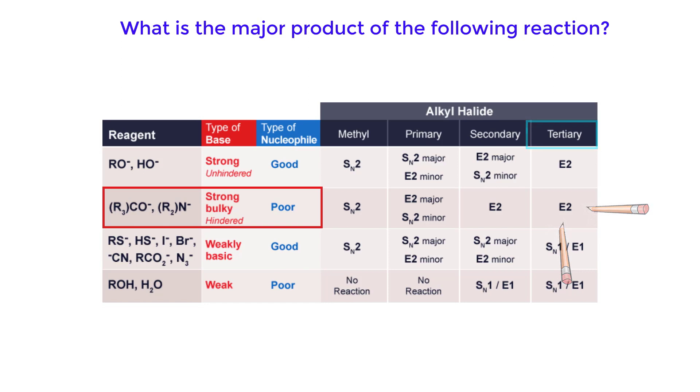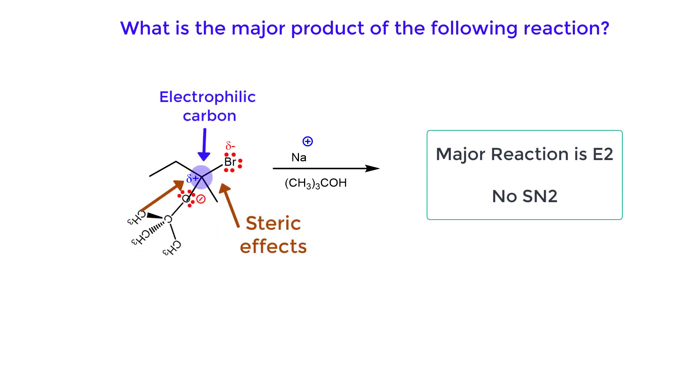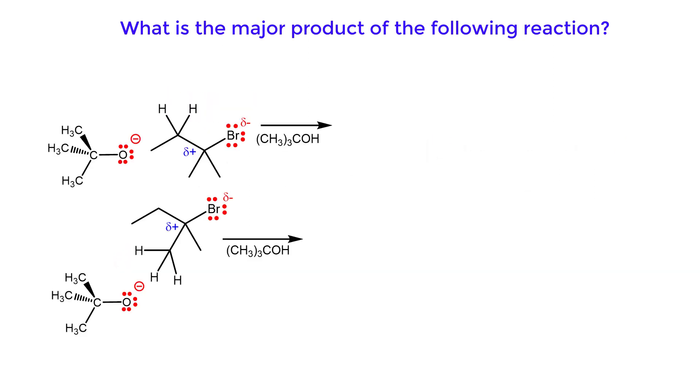The dominant reaction will be an E2 reaction because the bulky base is sterically hindered from reaching the electrophilic carbon. The SN2 product will not form in this reaction. The E2 reaction can occur at the secondary beta carbon to produce 2-methyl-but-2-ene or at the primary beta carbon to produce 2-methyl-but-1-ene.